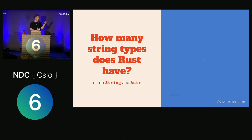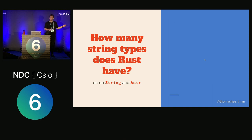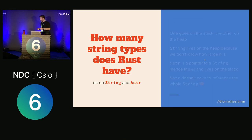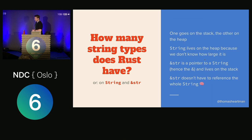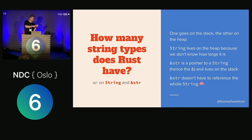Another thing worth discussing gets to the topic of stack, heap, and Rust's string types. The ones you see in common usage are String and str. These have different purposes: String lives on the heap; str lives on the stack. The heap is where you put large data structures of unknown size that can grow and shrink. That's why String lives on the heap — you can grow it, mutate it, do what you want with it.